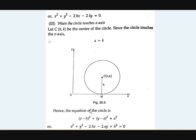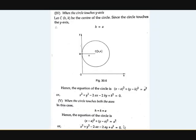Substituting a equals k into the equation: x minus h whole square plus y minus a whole square equals a squared. Expanding, x minus h whole square becomes x squared minus 2hx plus h squared, and y minus a whole square becomes y squared minus 2ay plus a squared. The a squared terms cancel, giving us the final equation for a circle touching the x-axis.